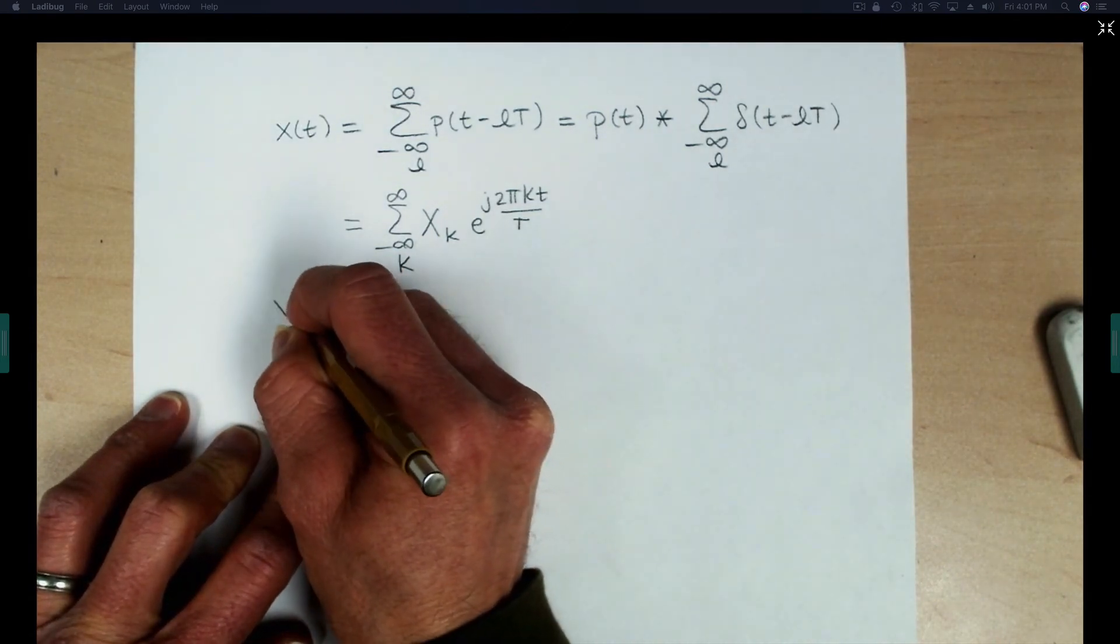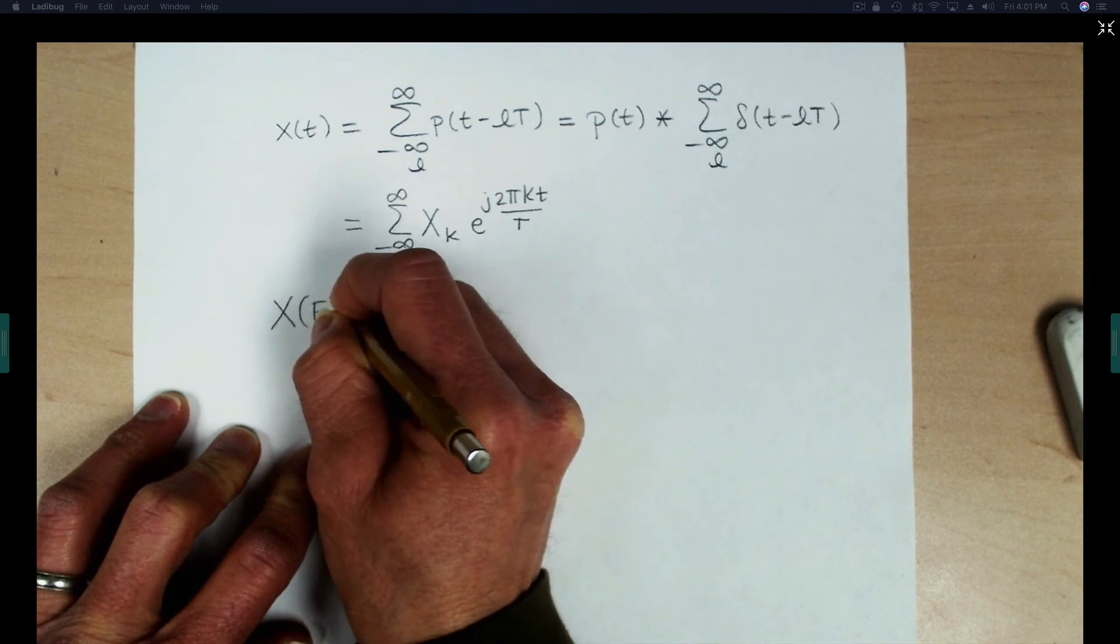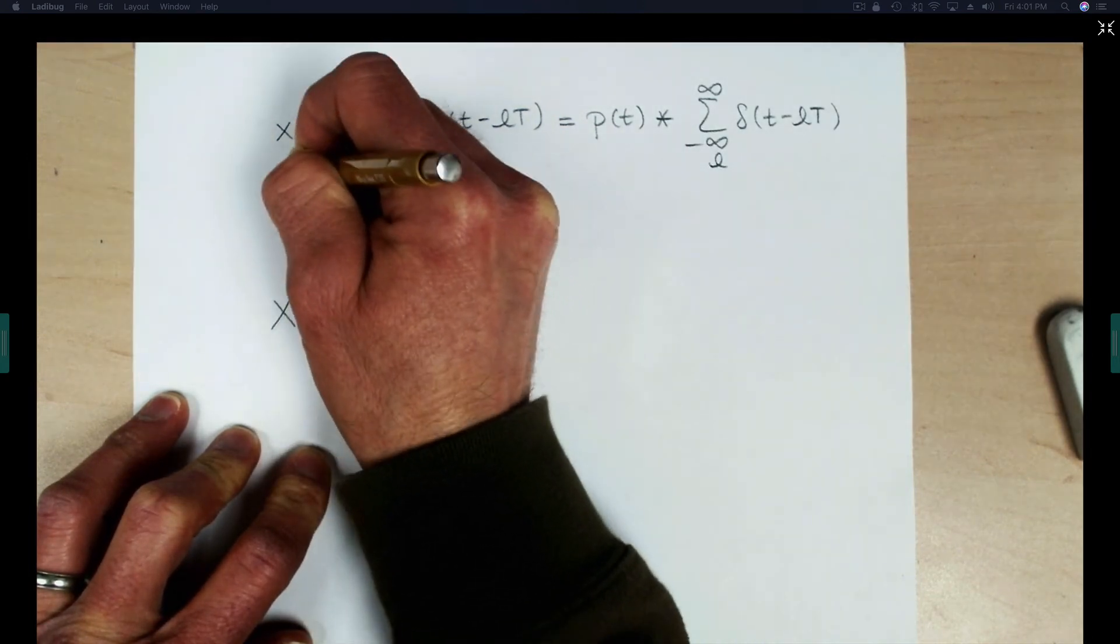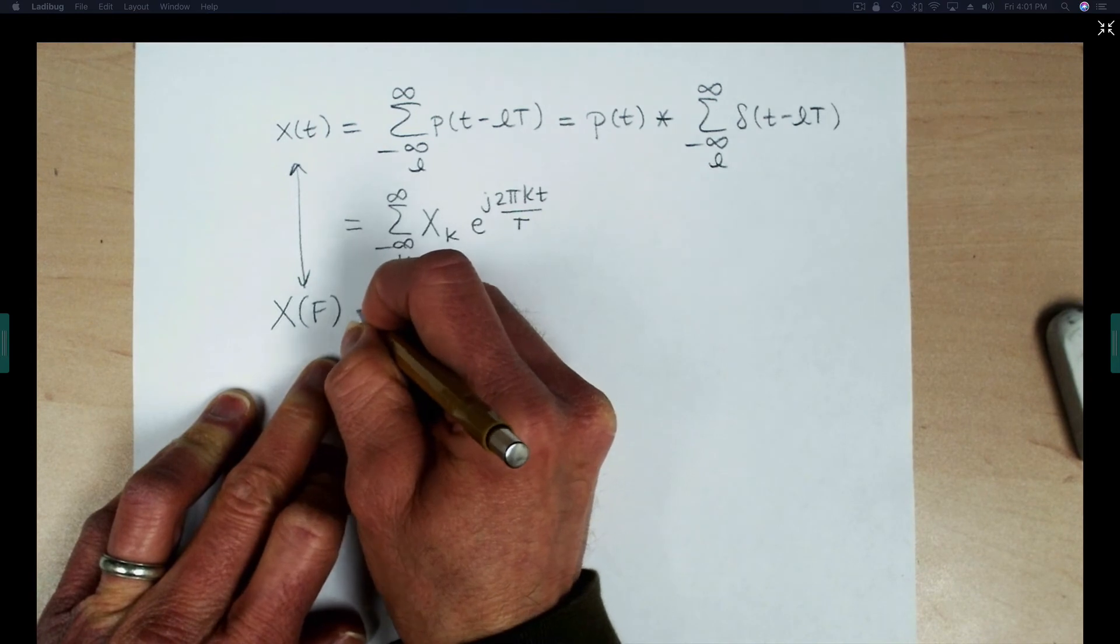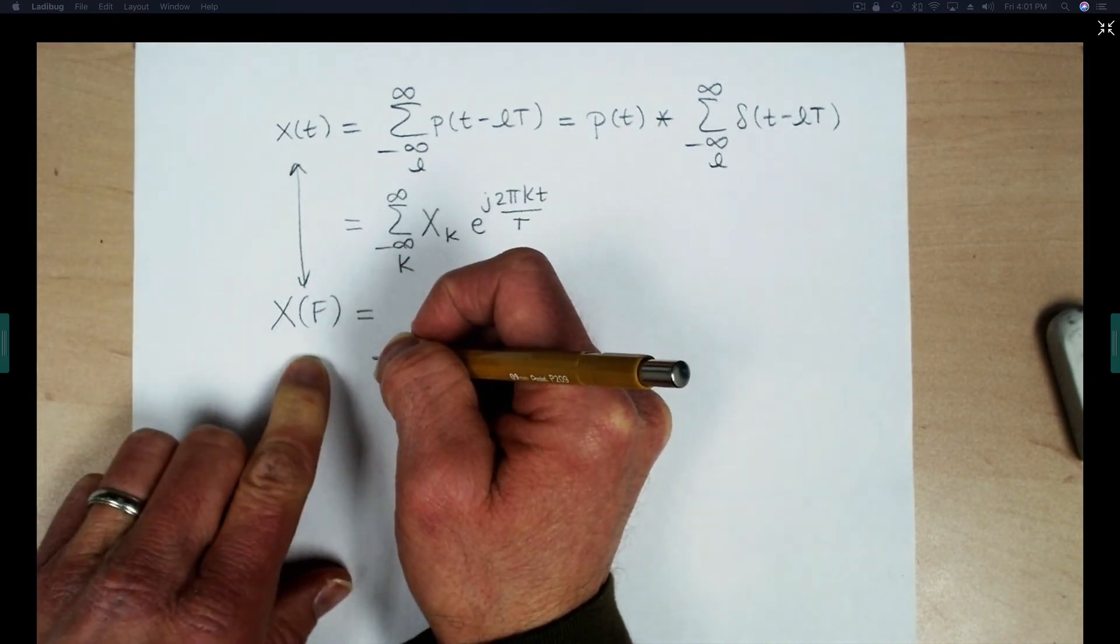And then to calculate the Fourier transform, once again, this is a review, but what we'll do is just calculate the Fourier transform of both sides of this expression. So X of T becomes X of F.